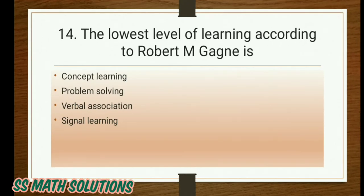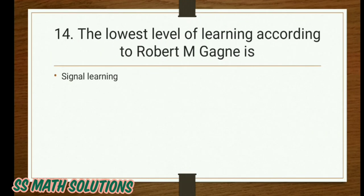The lowest level of learning according to Robert M. Gagné is: concept learning, problem solving, verbal association, or signal learning. According to Gagné, the lowest level of learning is signal learning.